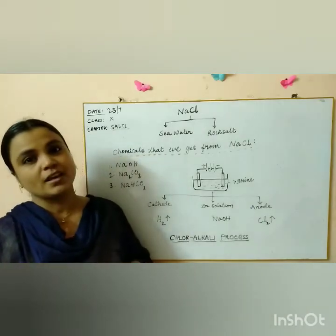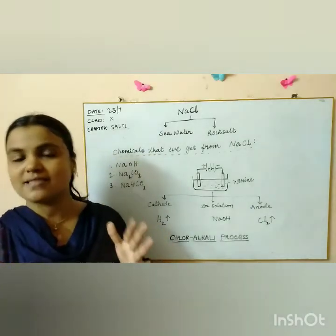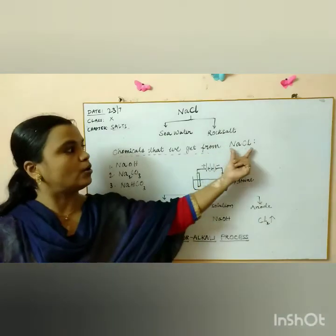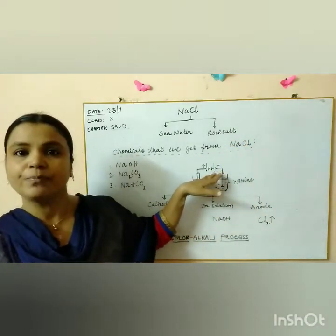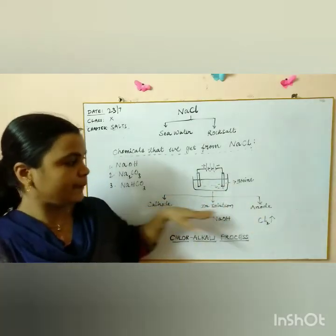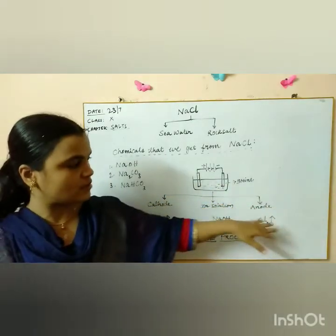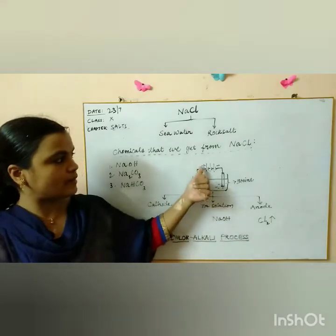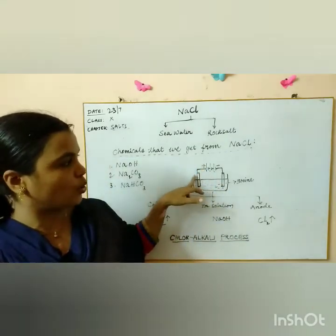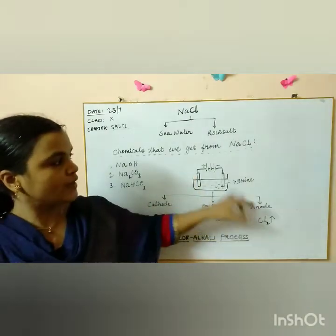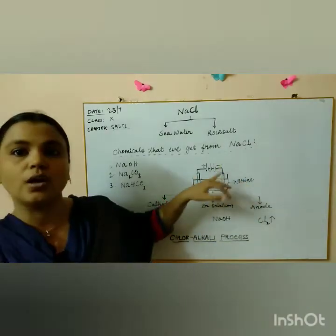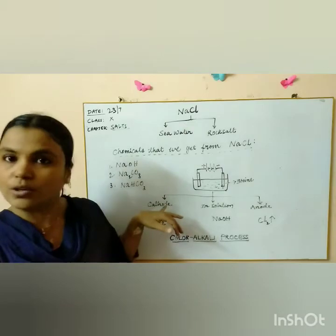So what happens then? It results in electrolysis. The sodium chloride compound is broken down by the way of electricity and thus it produces many products as you can see over here. We know that the positively charged electrode is nothing but the anode and the negatively charged electrode is also called as cathode.